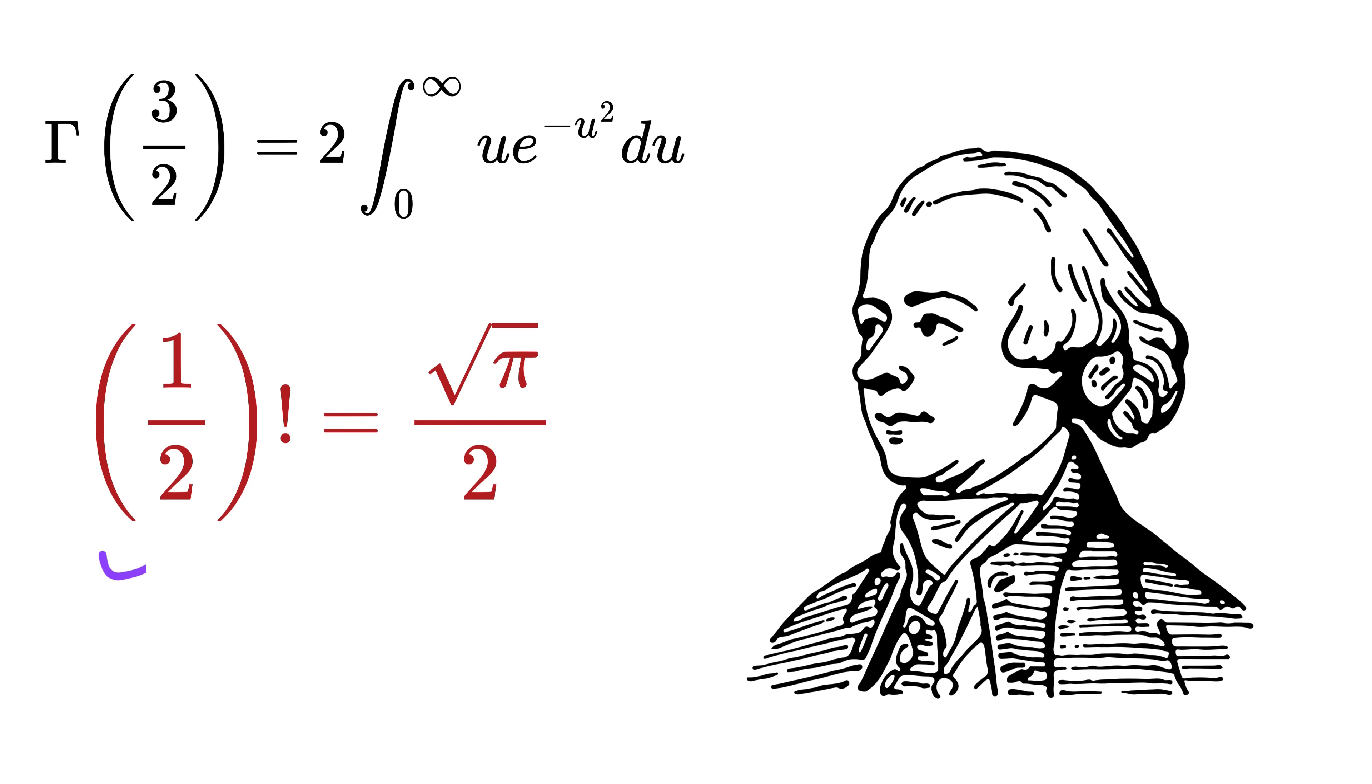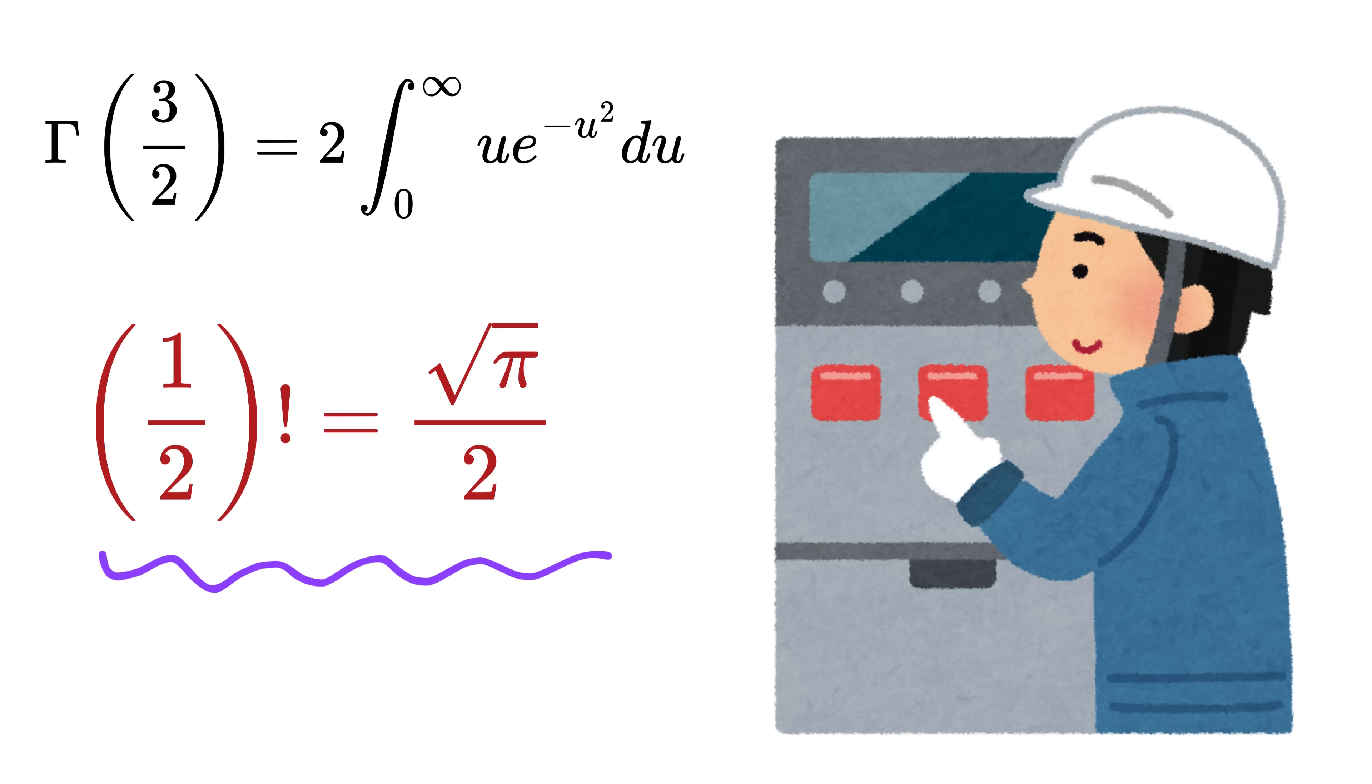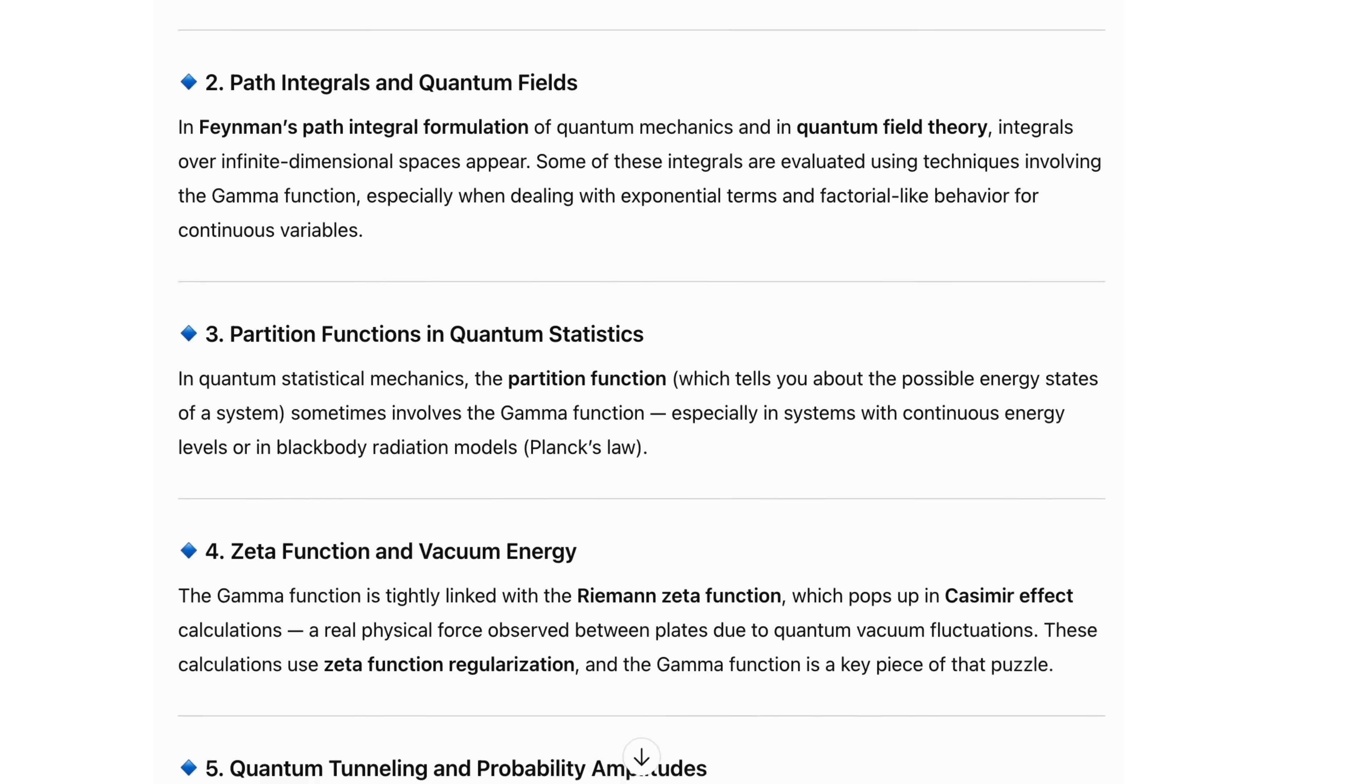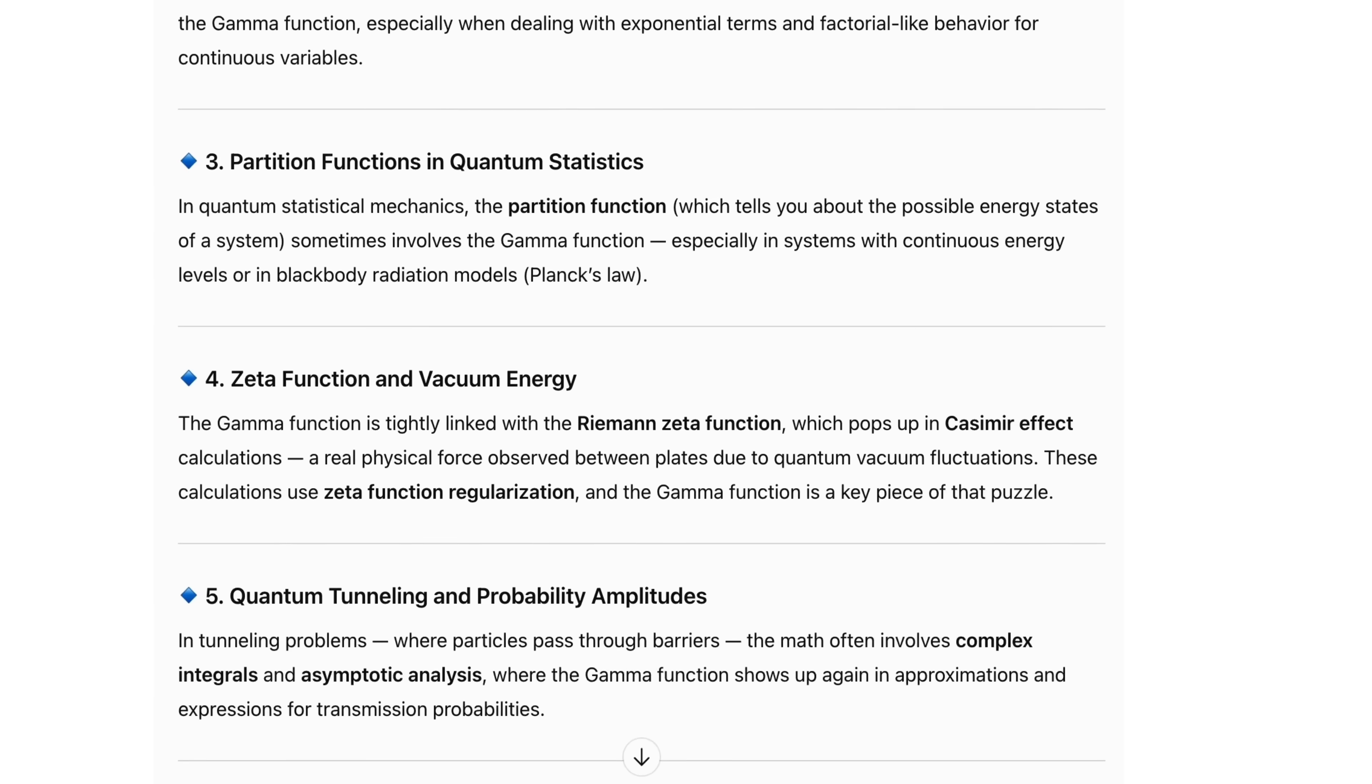By the way, this powerful idea of gamma function shows up in some of the most important places in science and engineering. It's used in probability theory, especially in the normal distribution or bell curve, in quantum physics to calculate energy levels and particle behavior, in statistics to find patterns in data, and even in machine learning and AI when modeling continuous processes.